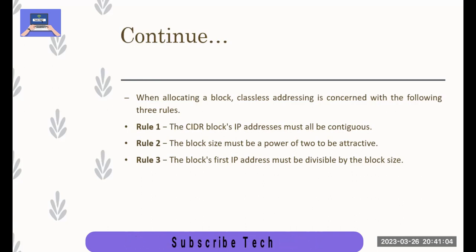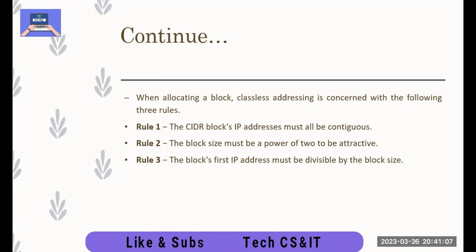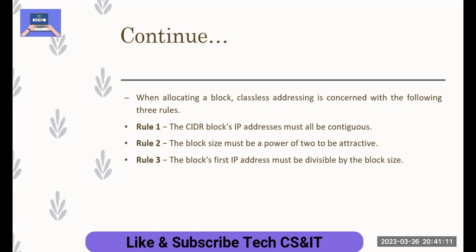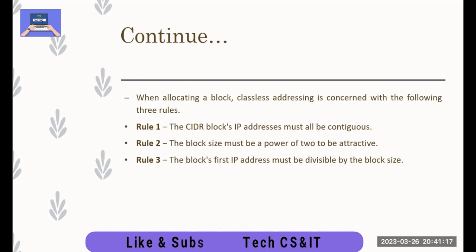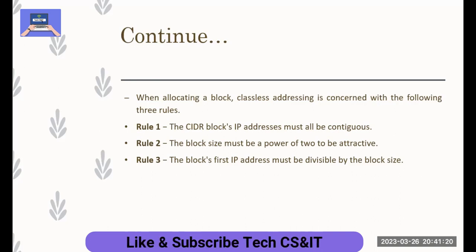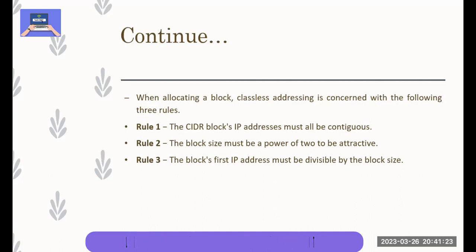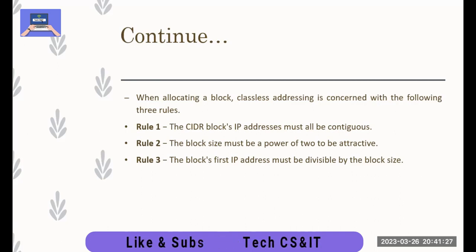The second rule is about the size of the block. The block size must be a power of 2. For example, if we have a block size of 15, we cannot assign it as a valid block. We cannot give 15 as a block size. If 2 to the power gives 16, we can assign it to the block.